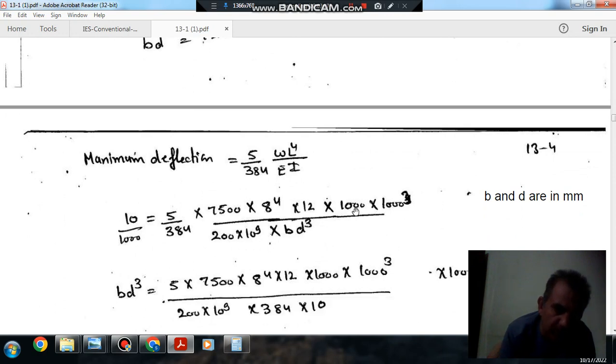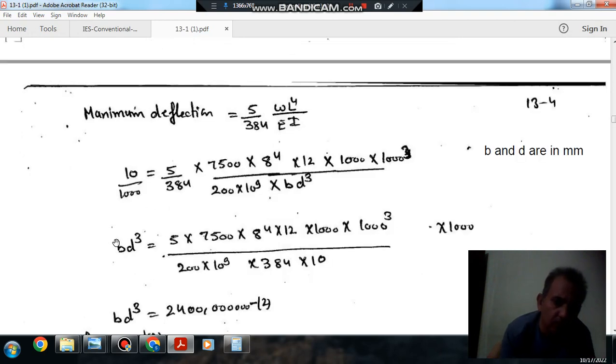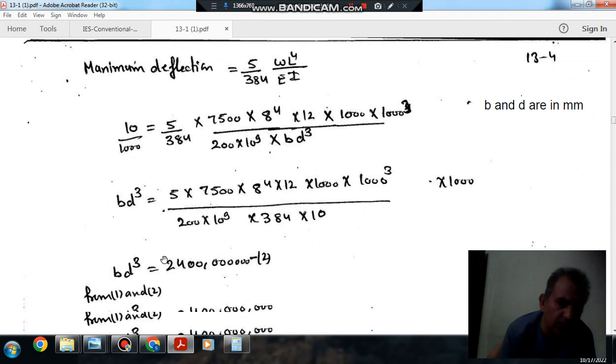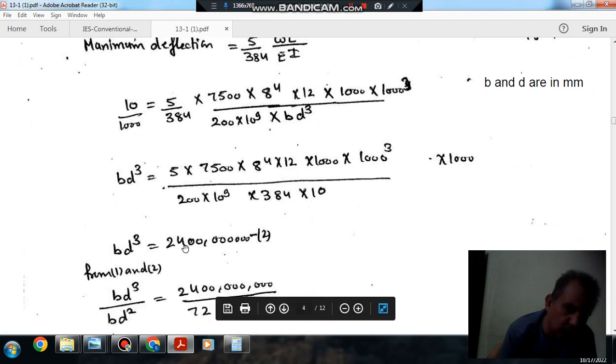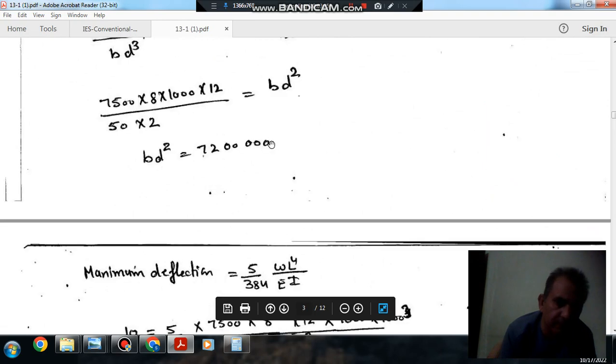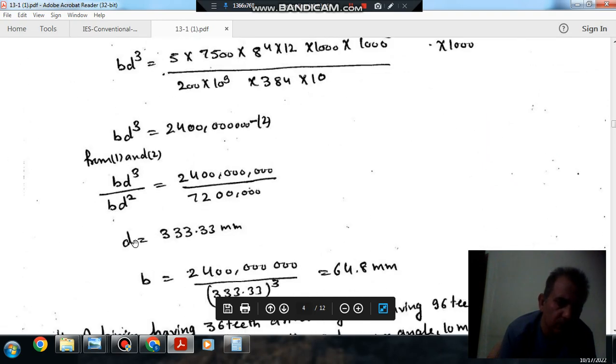So from this we will find out BD cubed, so BD cubed will be 2400000000. So dividing this equation 1 by equation 2, we can get D, so D comes out as 333.33 mm.